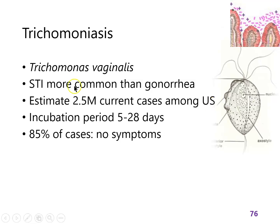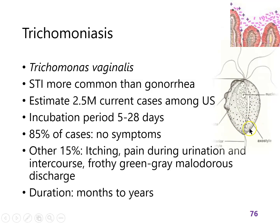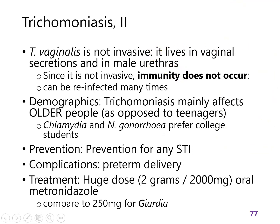Trichomoniasis is a sexually transmitted infection and it's more common than gonorrhea. We don't hear as much about it partly because it's more common in older people than in college-age people. In most cases it's asymptomatic, but in others it can lead to discharges and pain, and it can last for years. It's not invasive — it lives in the urethra or the vaginal lining — so a person can't really mount a good immune response against it and can be reinfected many times. STI prevention barriers can help prevent this, and there are drugs that can treat it.